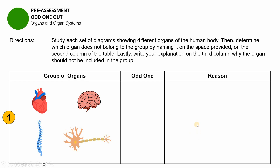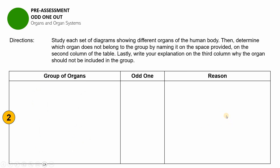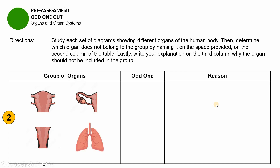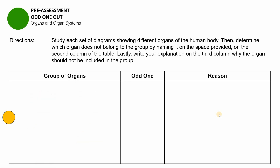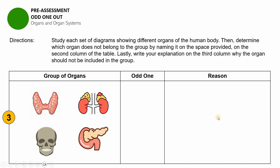Are you done with the first item? Let us now proceed to item number two. Please look at the organs in this group, choose the odd one, and state your reason. Are you done? Let us now proceed to the third item. For the third item, this is the group of organs you will work with. Please choose the odd one, write it in the designated space, and state your reason for choosing it.